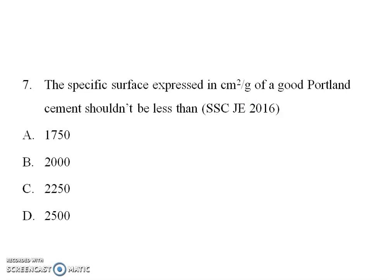Next question: The specific surface is expressed in cm² per gram of good Portland cement and should not be less than 2250 cm² per gram. This relates to the fineness of cement.